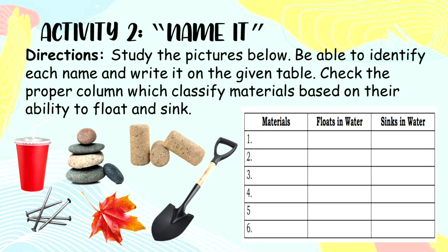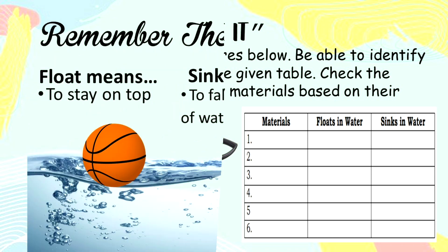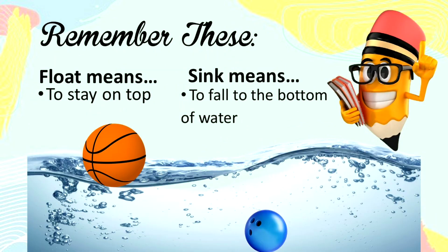Activity number two: Name It. Study the pictures below. Be able to identify each name and write it on the given table. Check the proper column which classifies materials based on the ability to float and sink. For better understanding of the activities, read and understand the following information.